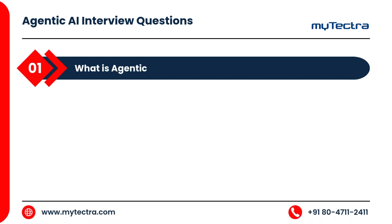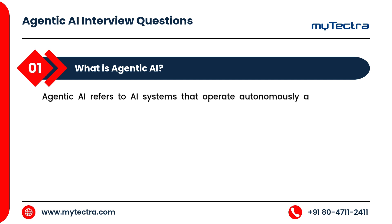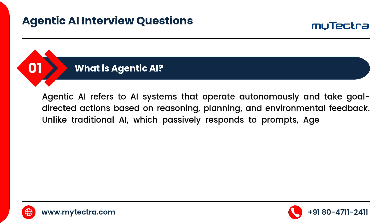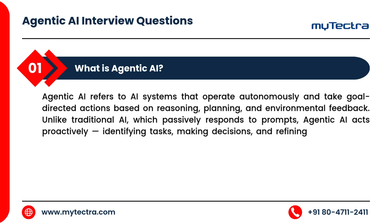What is agentic AI? Agentic AI refers to AI systems that operate autonomously and take goal-directed actions based on reasoning, planning, and environmental feedback. Unlike traditional AI, which passively responds to prompts, agentic AI acts proactively, identifying tasks, making decisions, and refining its strategy to achieve specific outcomes with minimal human input.